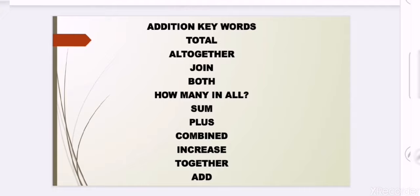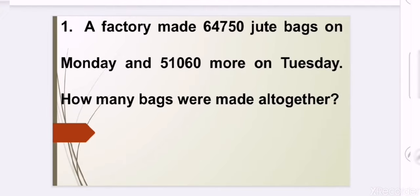Now we have to read our word problem number 1. A factory made 64,750 jute bags on Monday and 51,060 more on Tuesday. How many bags were made all together?